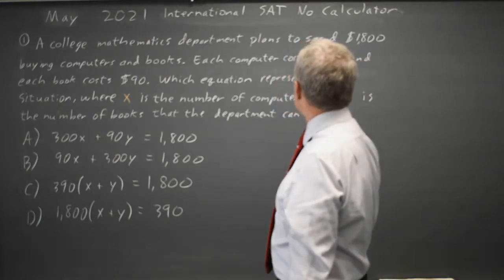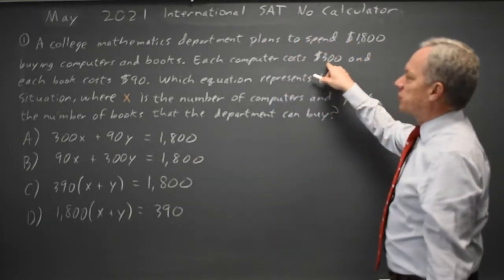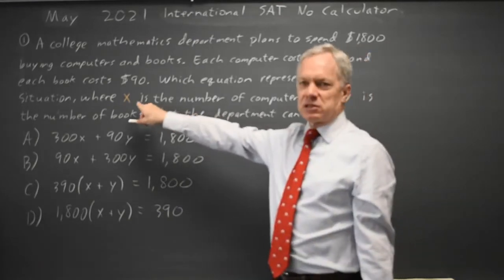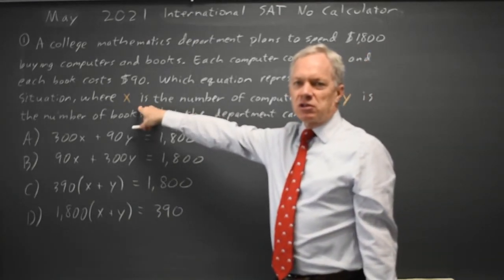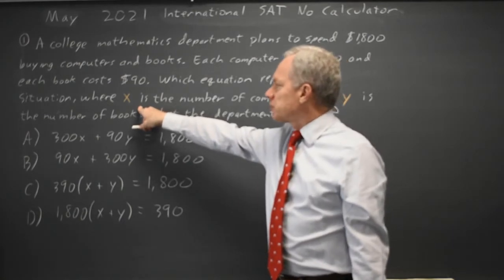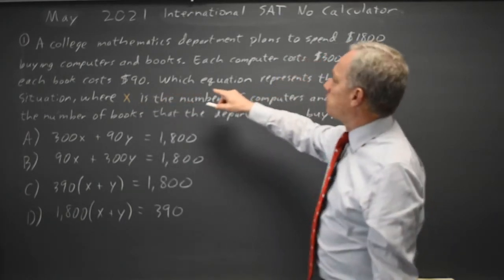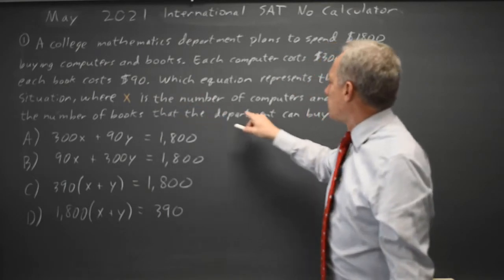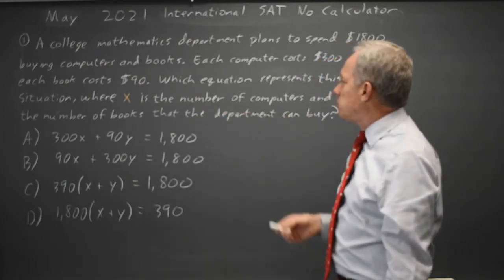purchasing books and computers, where each computer is $300 and we buy X computers, so $300 times X dollars per computer is the number of dollars spent on computers. Each book is $90 and we buy Y books, so